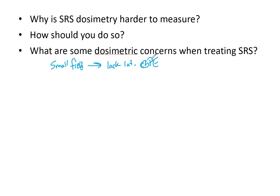So how do we measure it? If you want percent depth dose and profiles, you can use an ion chamber — importantly, one with a diameter less than one millimeter — or something like an edge detector. You want something that won't be oversaturated, but you also don't want the volume averaging of a large chamber. Always perform end-to-end testing as well.